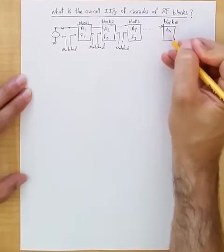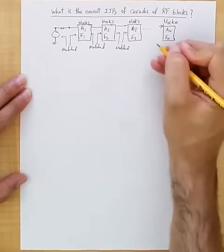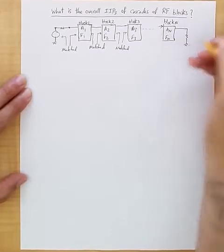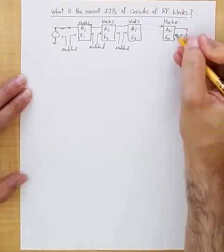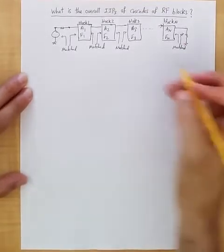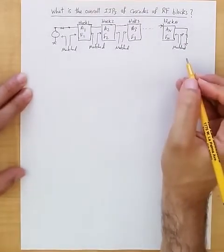With voltage gain An and noise factor Fn, and finally it's impedance matched with the final load. So matched here, and the reason for matching is the power transfer. So let's say this is the assumption we have for this cascade of RF blocks.